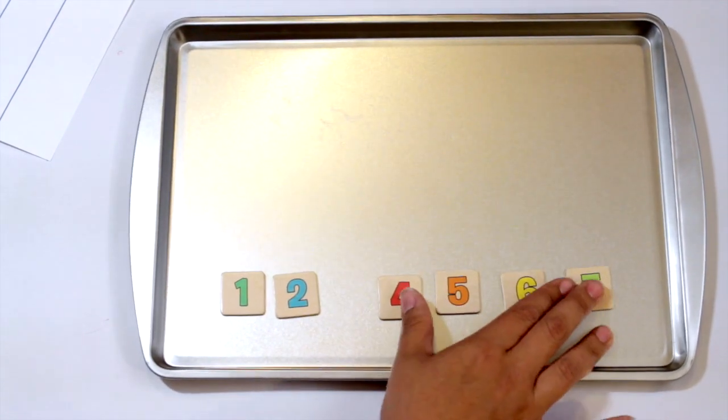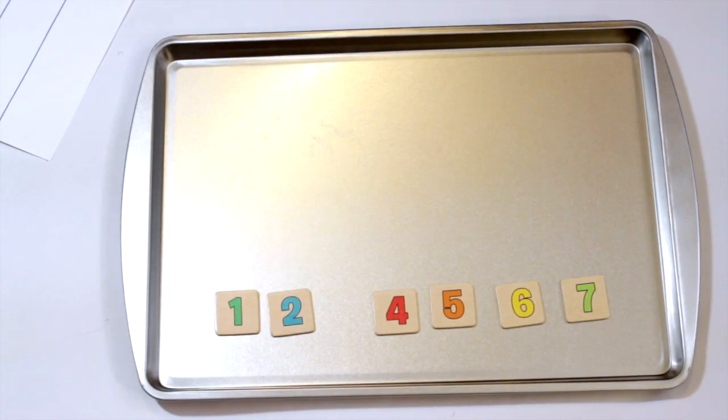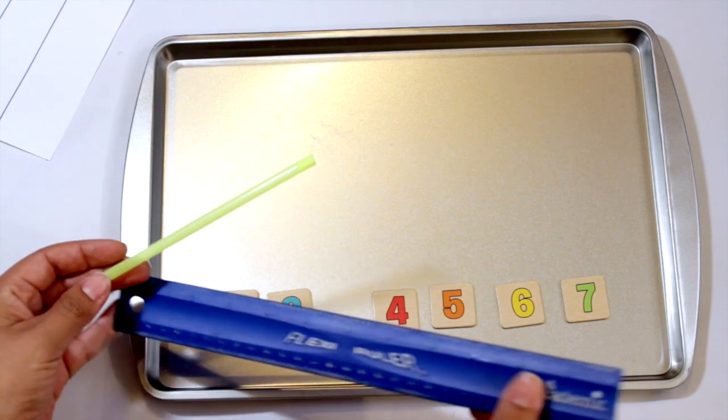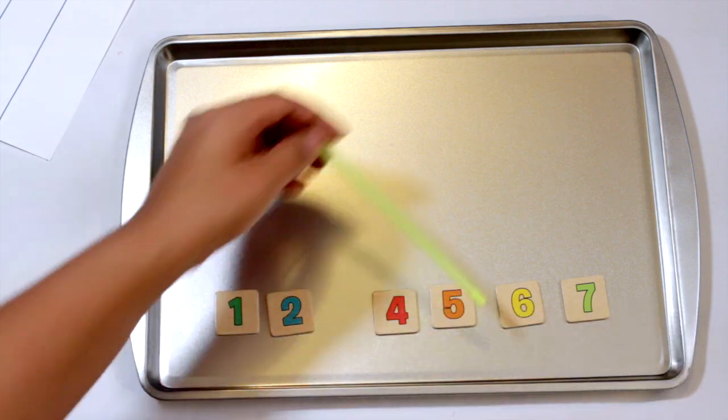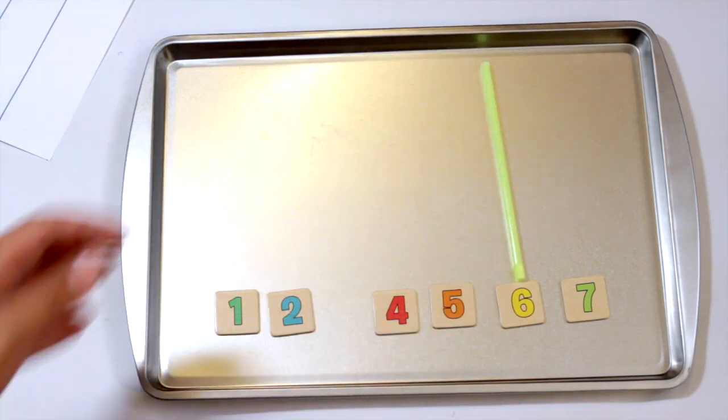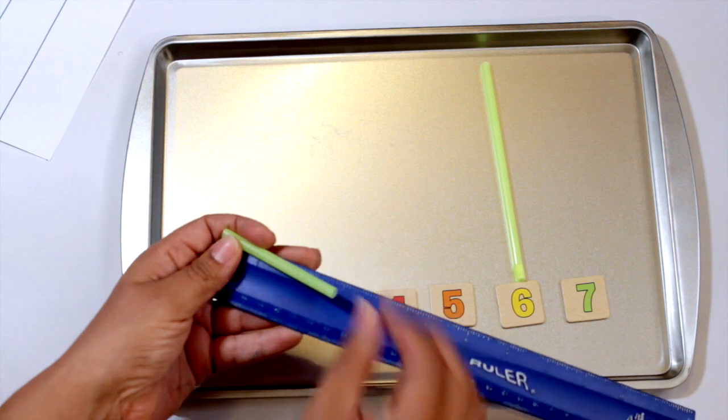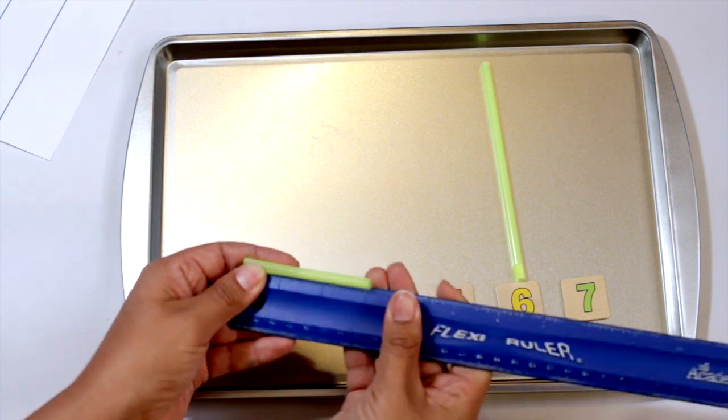Right now I have my seven numbers here, and your child can take a ruler and learn about increments. Measure each straw - this one's six inches - and sort them this way.